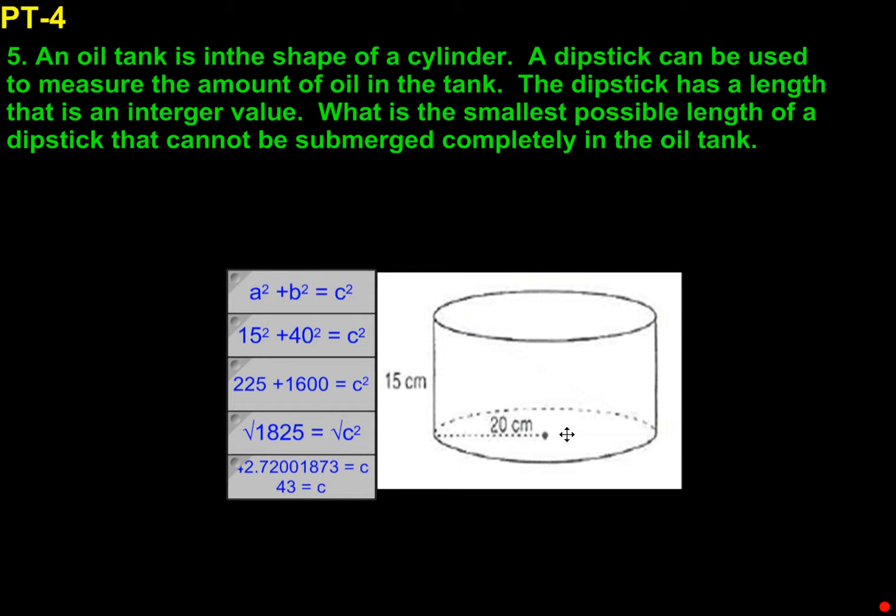What's the smallest possible length of a dipstick that cannot be submerged completely in the oil tank? If we start by taking a look at what we have, we have the side of the tank and the bottom of the tank as legs for that right angle, and diagonally across is our hypotenuse. Since 20 centimeters was the radius, we need the full diameter, so we're going to use 40.